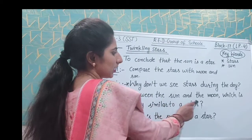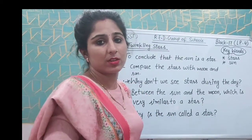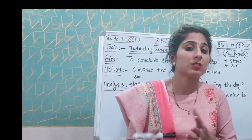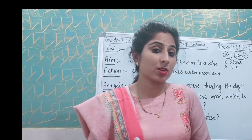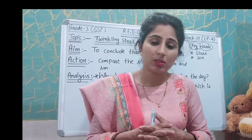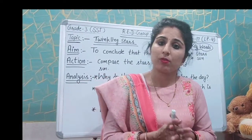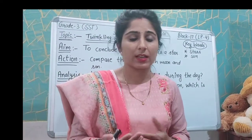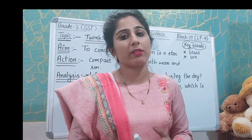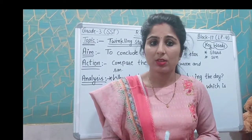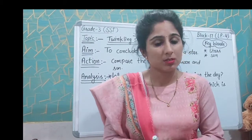The next question is: between the sun and the moon, which is more similar to the stars? Stars have their own light and heat, and they are made up of gases like the sun. So stars are similar to the sun, not the moon, because they have their own light. The moon does not have its own light — it receives light from the sun.